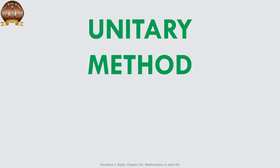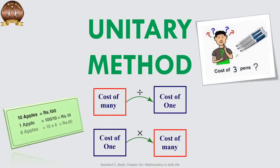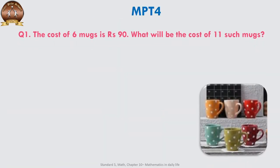Hello and welcome to Maths Plus. Today we are going to learn about a new topic: the unitary method. 'Unit' means one. There are a few images on the screen. On the right-hand side, you have the cost of three pens to be found when the cost of one pen is given. On the left-hand side, you have the cost of 10 apples given — how do you calculate the cost of one apple, and then the cost of six apples? When the cost of many things is given and we have to find the cost of one thing, we divide. When the cost of one item is given and we have to find the cost of many items, we multiply. This method is known as the unitary method.